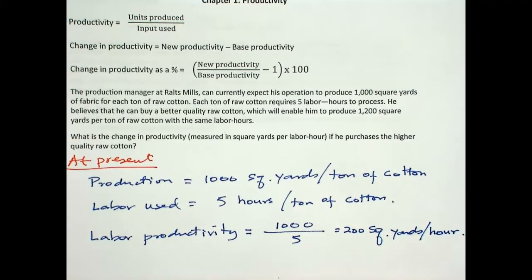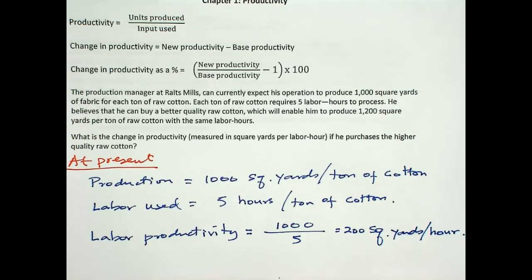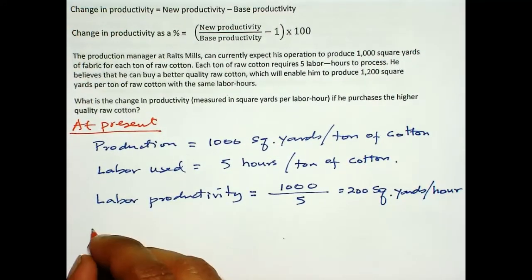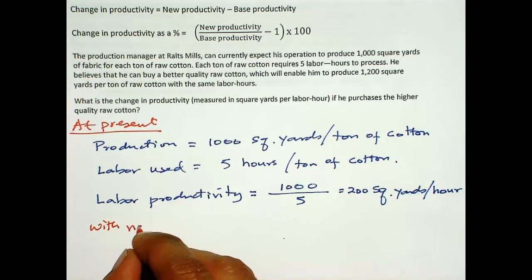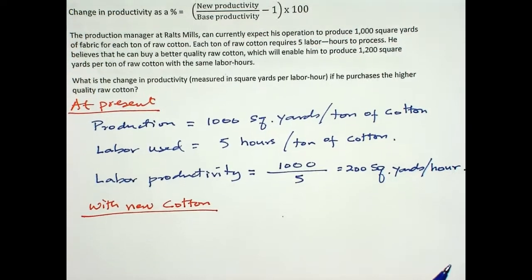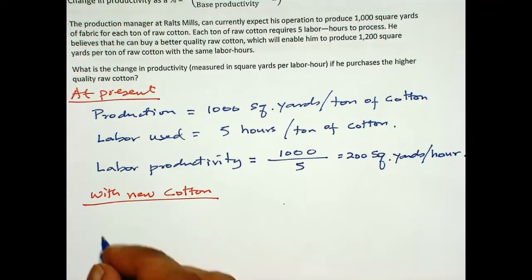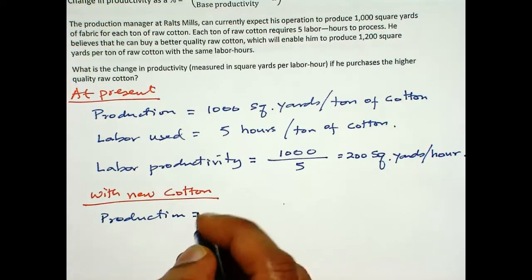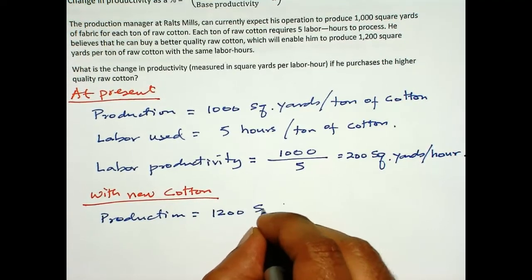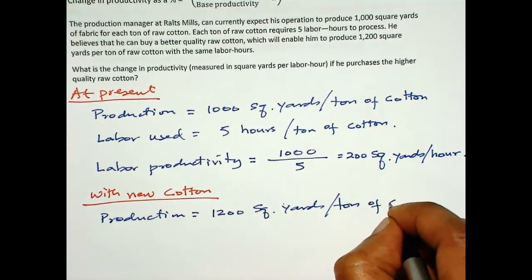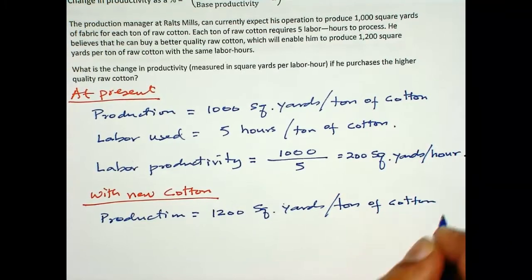Now with the new cotton, production is 1200 square yards per ton of cotton.